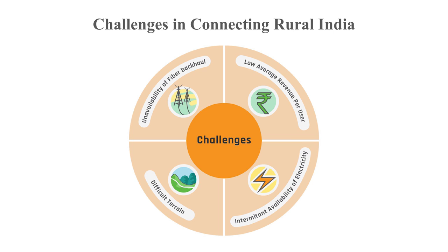The third challenge is intermittent availability of electricity. While 95% of villages in India are electrified, grid electricity is not reliably provided — there are 8 to 12 hours of power outages. So any solution needs to depend on diesel generator sets, which increases fuel costs.